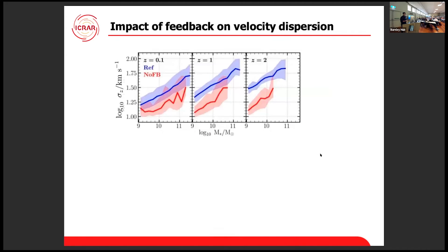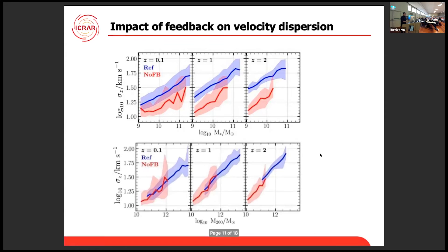Looking at velocity dispersion on the y-axis as a function of stellar mass for different redshifts, we again find this clear offset between the two simulations, which would in principle suggest feedback has an effect. However, we noticed that if we change the x-axis to halo mass, the two simulations actually agree very well. This is the same plot as before, just changing the x-axis, and you can see the predictions from the no-feedback run are in agreement with the reference model. The conclusion is that feedback does not seem to be the main driver — instead, velocity dispersion is driven by something that correlates with halo mass or larger-scale properties.